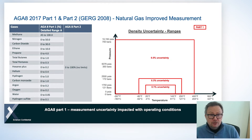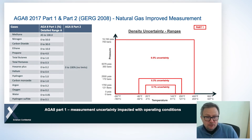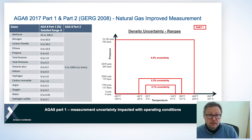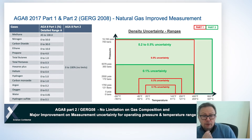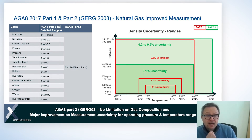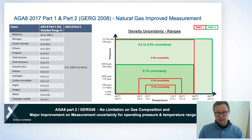Looking at part one on the right hand side, you can see the density measurement uncertainty. There's a small box in red at the bottom showing 0.1% uncertainty — that covers a temperature range of 25 to 143 Fahrenheit and up to 1700 PSI. Once you get outside that operating envelope, the measurement uncertainty increases to 0.3 or 0.5%. If we bring in AJ8 part two in the green box, the darker green box shows the wider applicability of part two, wider pressure and temperature range, and that still gives us 0.1% measurement uncertainty for density.